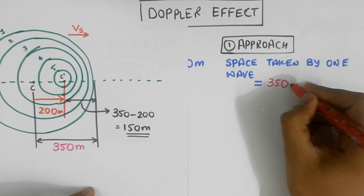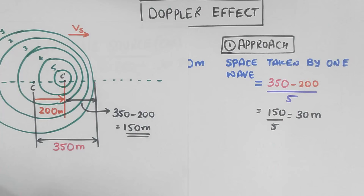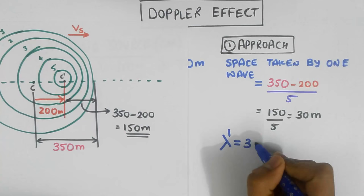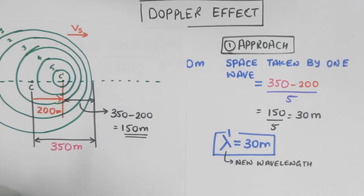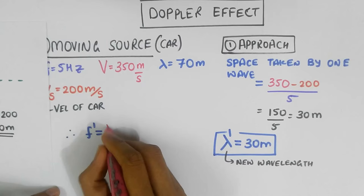It only takes 150 divided by 5 which is equal to 30 meters. Thus, the new wavelength, let's call it Lambda Prime, is just 30 meters. It is lower than before as you can clearly see. And the new frequency that I register, we can calculate using the same formula F equals V by Lambda.